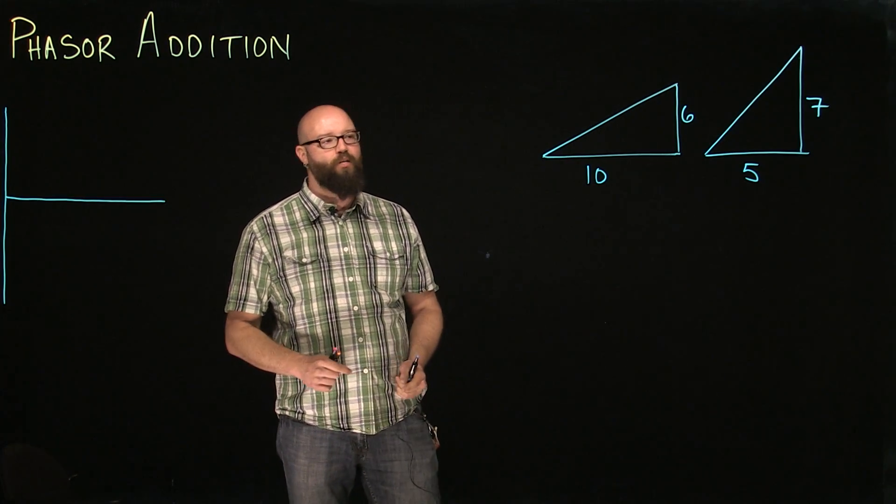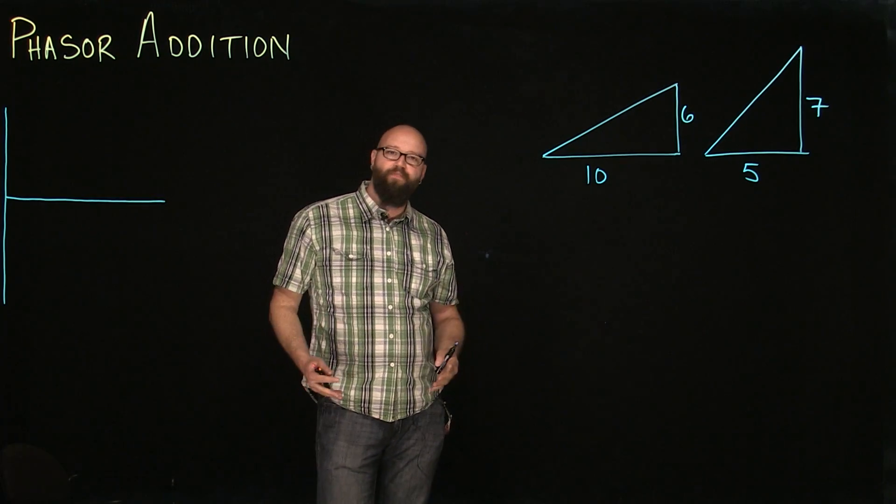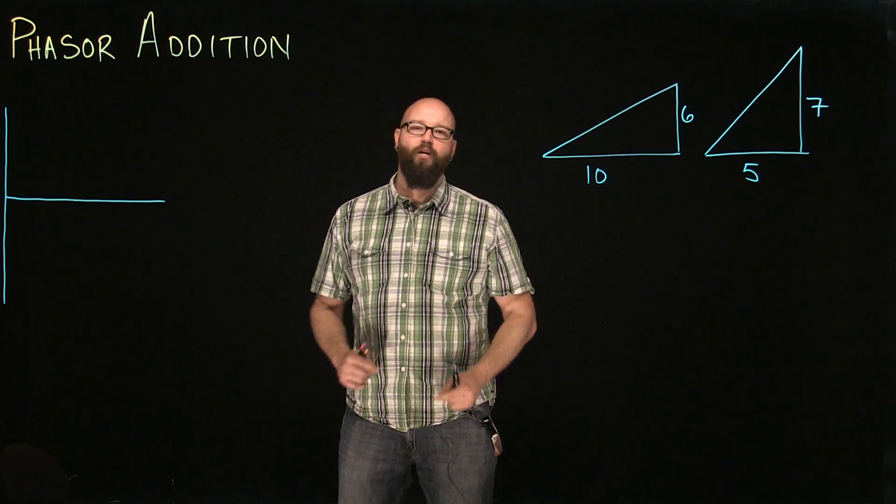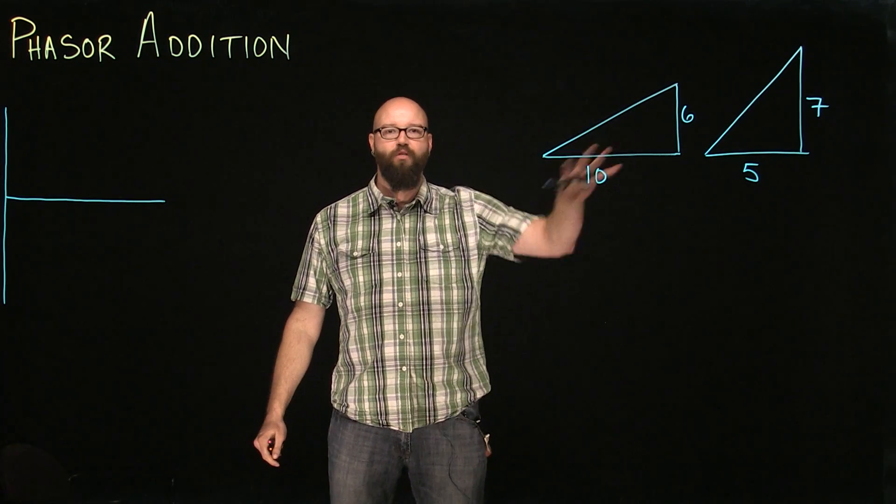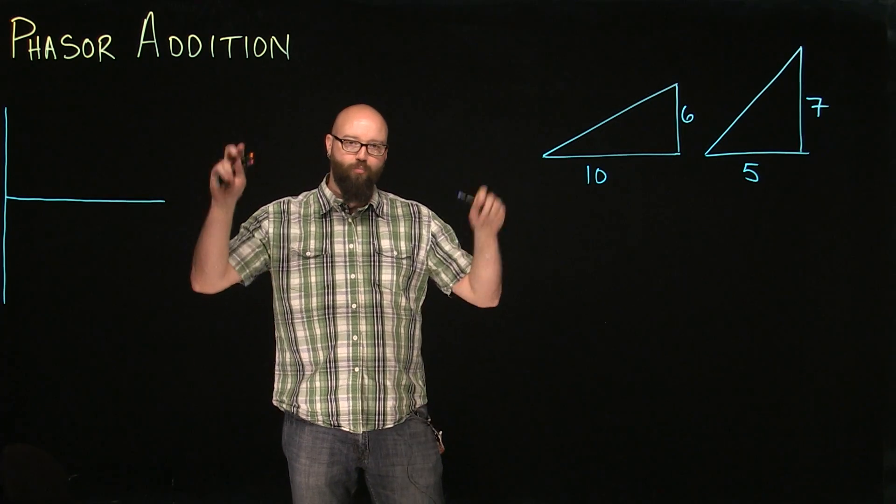Before we get to phasor addition, what we're going to talk about is actually adding triangles together. In a previous video, you've gone through Pythagorean's Theorem. You've figured out how to use trigonometric functions to solve all sides of these triangles. What we're going to talk about is how to combine these two and to create a super triangle.